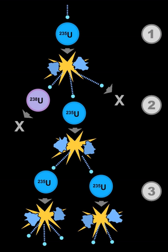A nuclear chain reaction occurs when one single nuclear reaction causes an average of one or more subsequent nuclear reactions, leading to the possibility of a self-propagating series of these reactions.